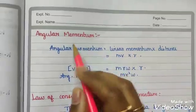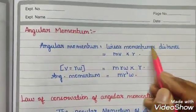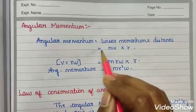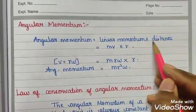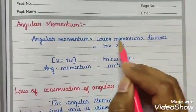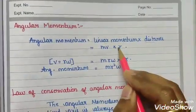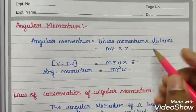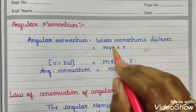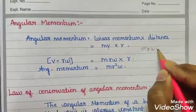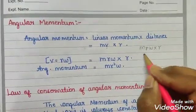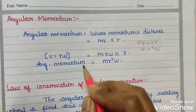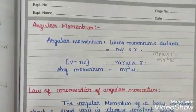Next: angular momentum. Angular momentum is linear momentum into distance. So angular momentum equals mv·r. Since v = r·omega, angular momentum equals m·r·omega·r = m·r²·omega.